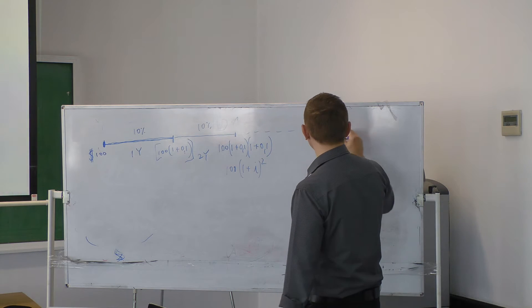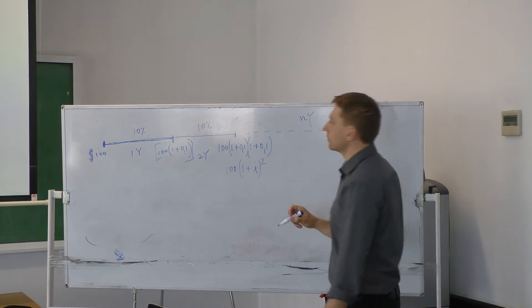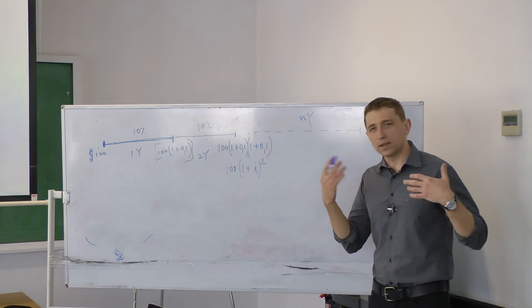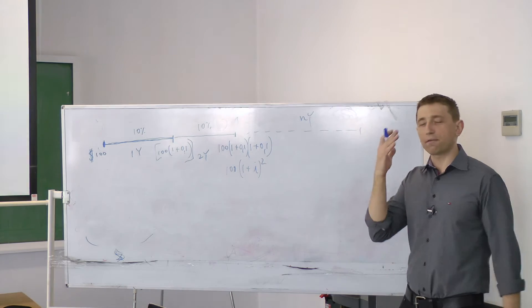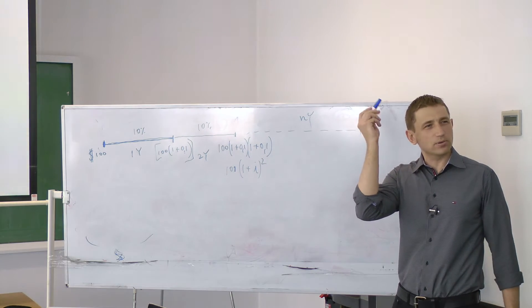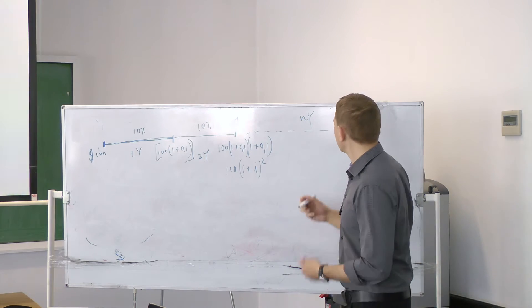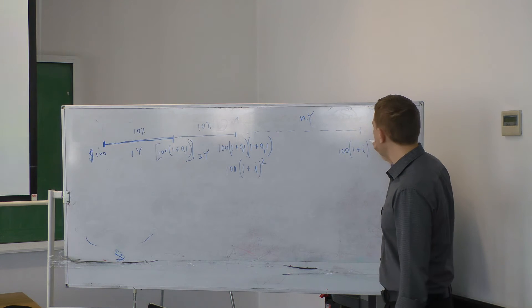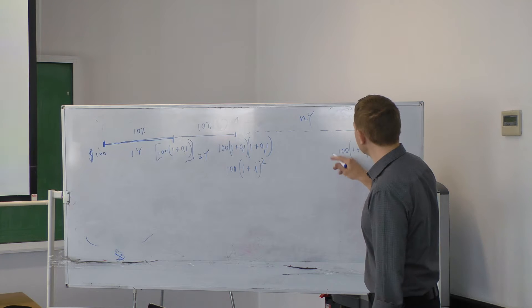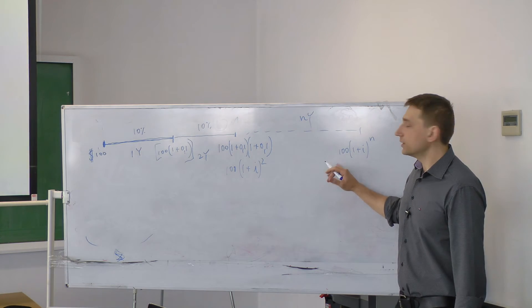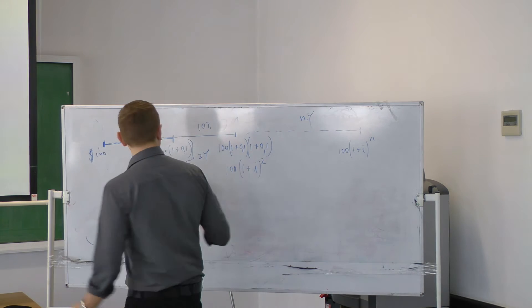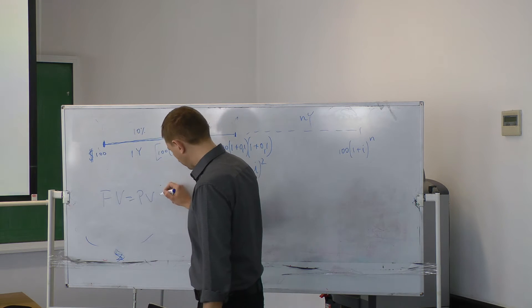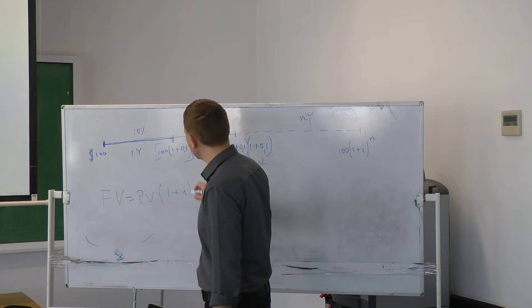And if my deposit goes for N years — I forget about it, I'm just enjoying life and getting old. One day I remember I used to have a deposit in a bank — how much do I have? It's (1 + i) to the power of N years. This is the future value.